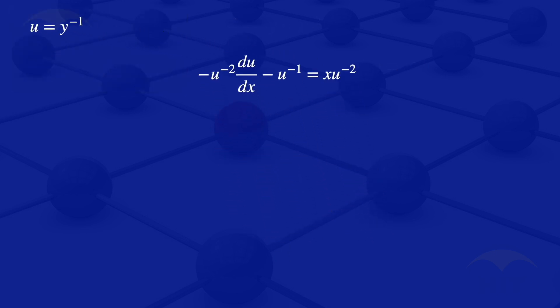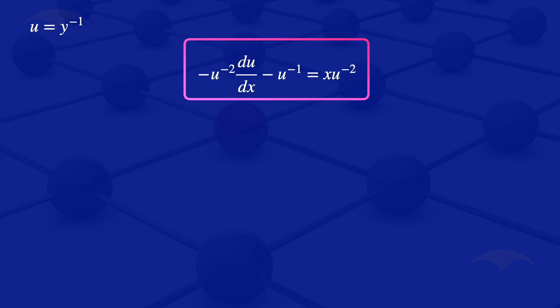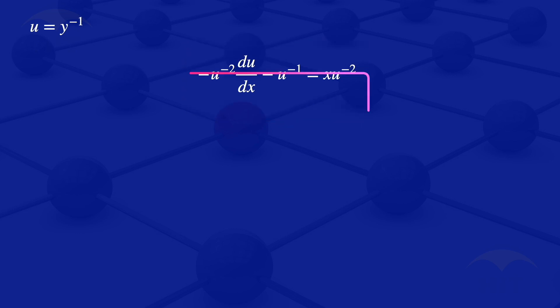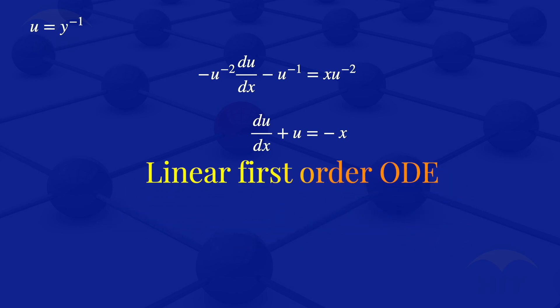We can make the coefficient of dU/dX equal to 1 by dividing the whole equation by minus U to the power minus 2. Dividing through gives us: the derivative of U with respect to X plus U is equals to minus X. What we now have is a linear first order ODE.